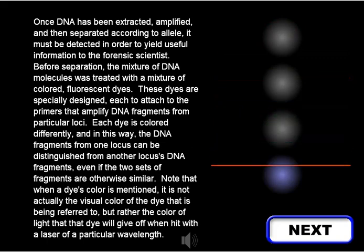Before separation, the mixture of DNA molecules was treated with a mixture of colored fluorescent dyes. These dyes are specially designed, each to attach to the primers that amplify DNA fragments from particular loci. Each dye is colored differently, and in this way the DNA fragments from one locus can be distinguished from another locus's DNA fragments, even if the two sets of fragments are otherwise similar.